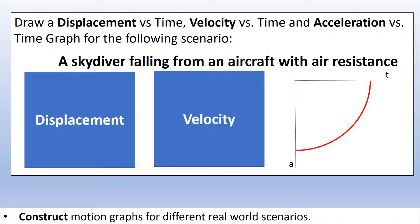Starting with acceleration: the skydiver is initially stationary, so air resistance is zero, meaning the acceleration starts at minus 9.81 m/s². As the skydiver moves faster, air resistance increases, reducing the resultant force until it equals zero — so acceleration approaches zero. Air resistance is proportional to velocity squared, which is why the graph curves in this way.